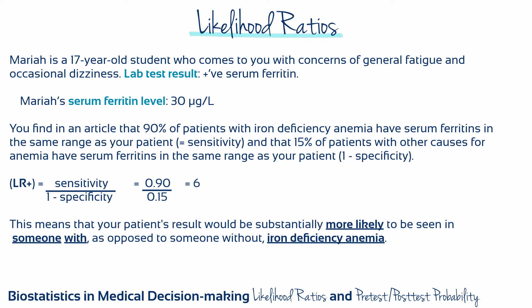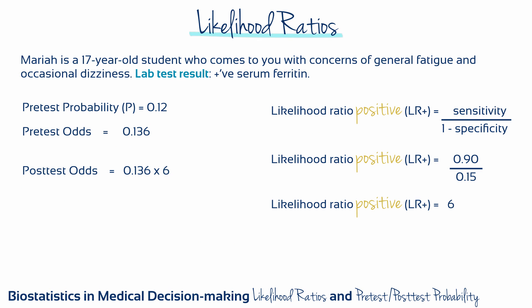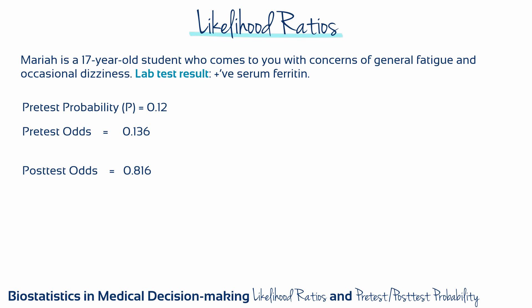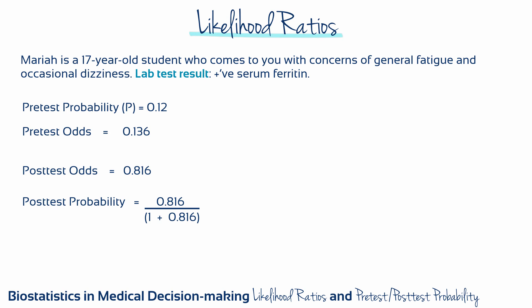You find an article that gives you sensitivity and specificity information for the serum ferritin test for iron deficiency anemia. This allows us to calculate a positive likelihood ratio of 6, meaning Mariah's test result would be substantially more likely to be seen in someone with, as opposed to someone without, iron deficiency anemia. Doing the calculation gives us a post-test odds of 0.816. Finally, we convert the post-test odds back to post-test probability, which gives us a final post-test probability of 0.45 or 45%.